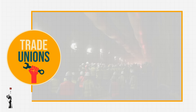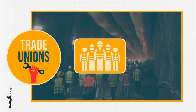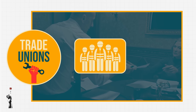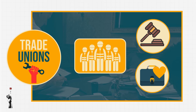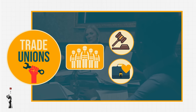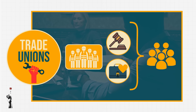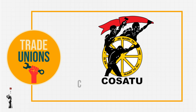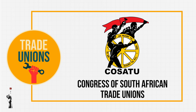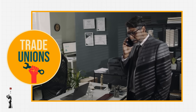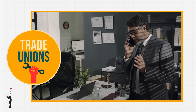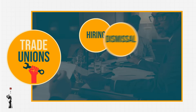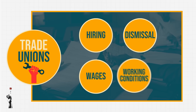Trade unions are an organized association of workers in a trade, groups of a trade or a profession, that is formed to protect and further the workers' rights and interests. A trade union is controlled, managed and paid for by its members. A well-known trade union in South Africa is COSATU, which stands for Congress of South African Trade Unions. A trade union negotiates with employers for their members to get the best deal in terms of hiring, dismissals, wages and working conditions.